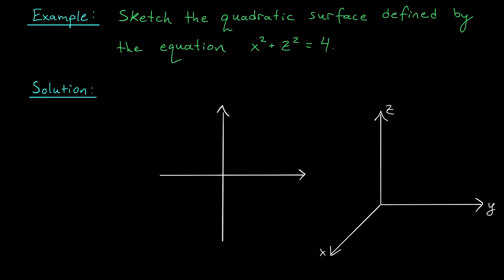I have one more example for you on sketching quadratic surfaces in R³. For this example, I'd like to sketch the quadratic surface defined by this equation: x² + z² = 4. Now, we could start just like before by looking at the level curves,